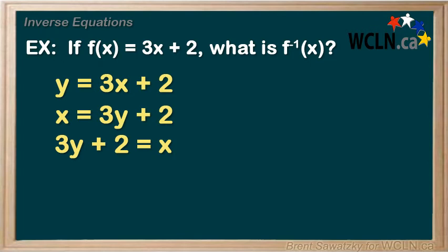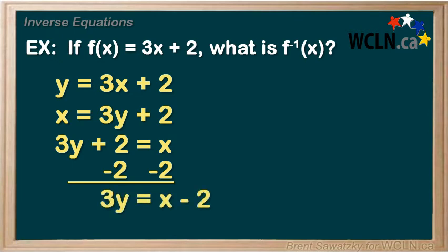Now we're still trying to get the y by itself, and we're currently adding 2, so let's subtract a 2. And whatever we do to one side, we do to the other, and we're left with 3y equals x minus 2.